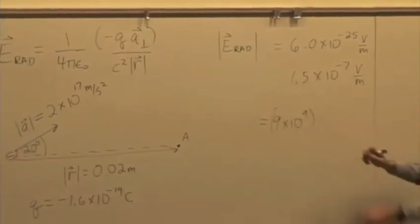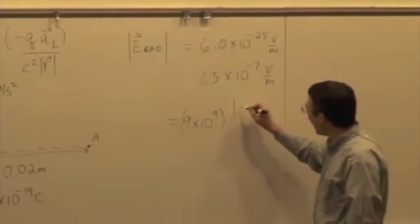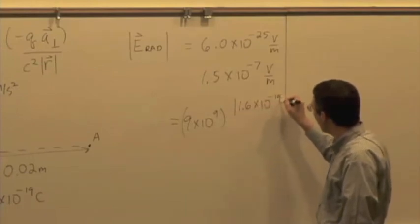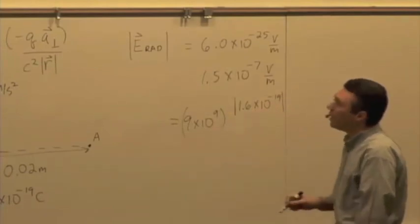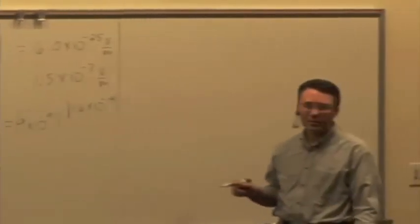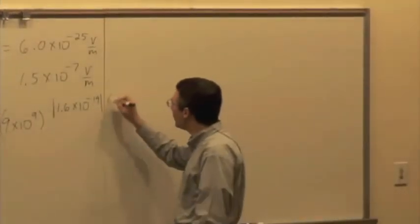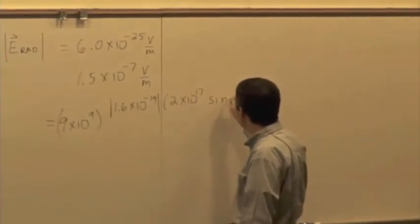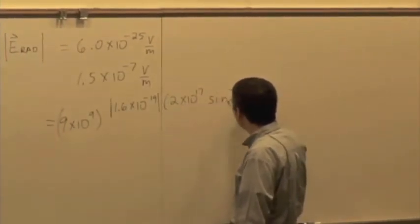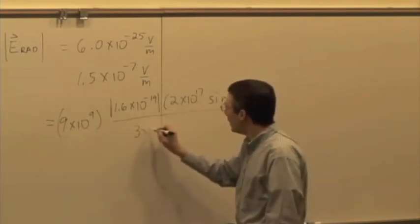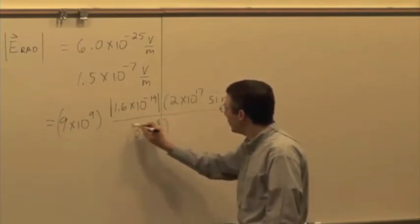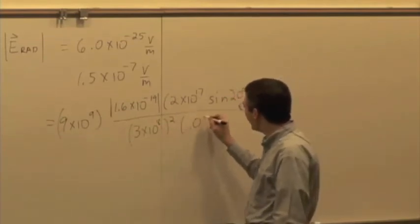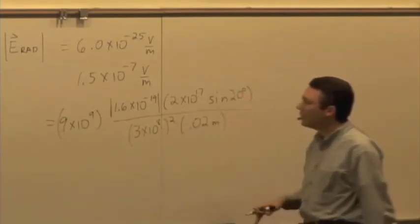And I'm just looking for the magnitude here, so the sign's not going to matter. I have the magnitude of the charge: 1.6 times 10 to the minus 19. How do I get A perpendicular? The sine of the angle, right? So I have 2 times 10 to the 17th times the sine of 20 degrees, divided by 3 times 10 to the eighth squared. And the distance we said is 0.02 meters.